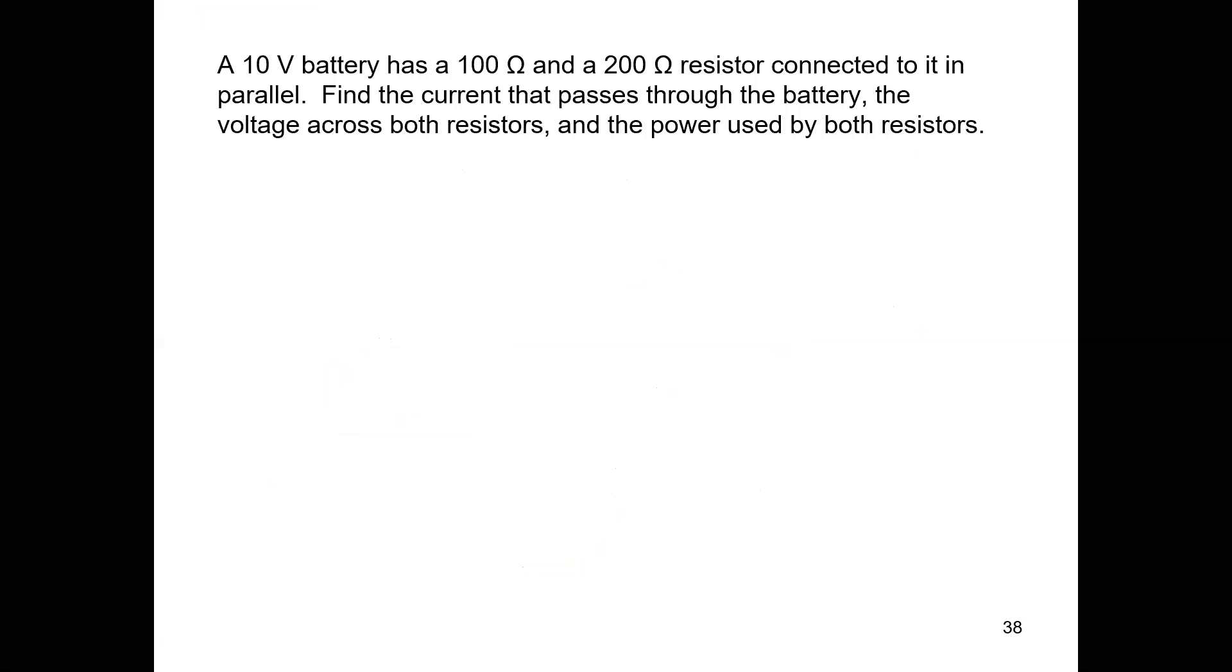This says we've got a 10 volt battery. That 10 volt battery has a 100 ohm and a 200 ohm resistor connected in parallel. We're supposed to do several things here. I want to find the current through the battery, the voltage across both resistors and the power used by both resistors. I'm going to find some other stuff while I'm at it too. So we've got a battery, we got one resistor there, and one there. R1, R2 and V_T here.